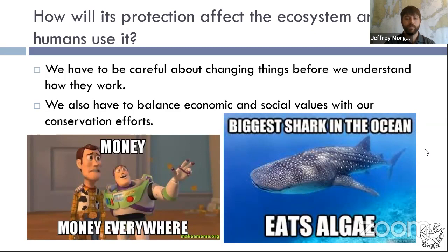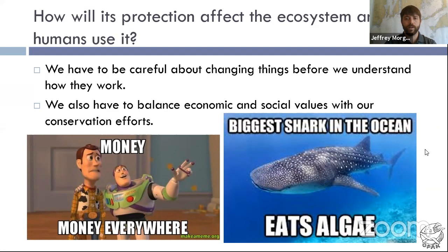We also do have to balance economic and social values with our conservation efforts. Money drives pretty much everything in our political climate. If we say we want to close down a fishery to sustain a species down the road, that's going to have some pretty immediate economic and social impacts on a community that relies on fishing for livelihoods. Closing a few boats has ripple effects all the way to the supermarket where prices change. There are transportation industries, ice industries — a lot of things in between a fish coming onto our plate are also impacted by fisheries management and marine protected area access.